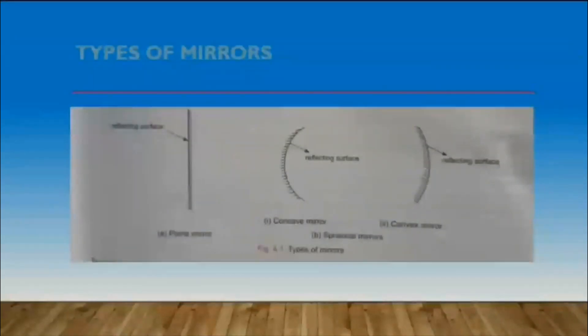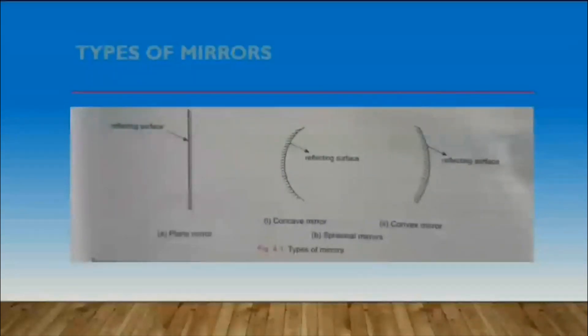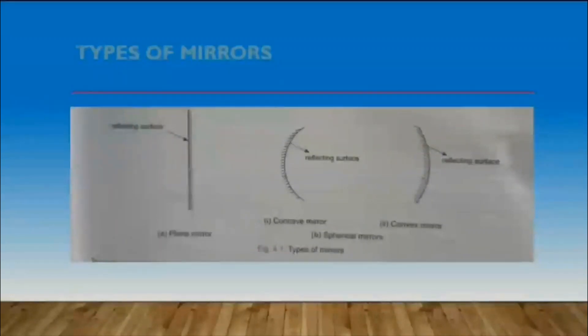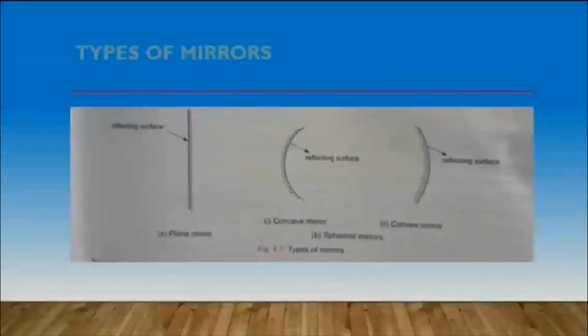The figure here shows the types of mirrors. There are two types of mirror, a plain mirror and a spherical mirror. Figure A shows a plain mirror — the smooth side shows a reflecting surface. Figure B shows the two types of spherical mirrors. In figure 1, we can see that the reflecting surface is curved inwards, and this is a concave mirror. In figure 2, we see that the reflecting surface is bulged outwards, and this type of mirror is the convex mirror.